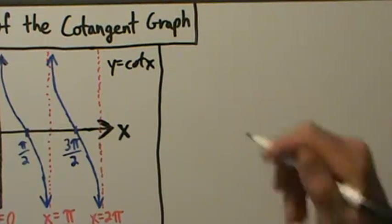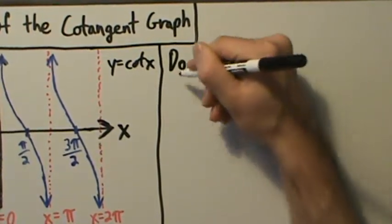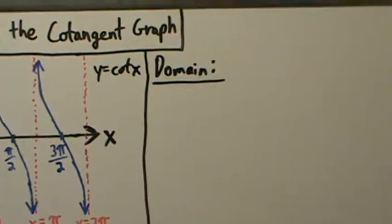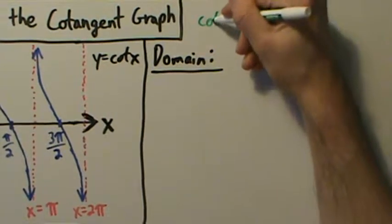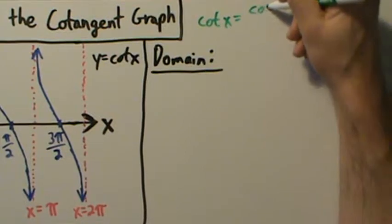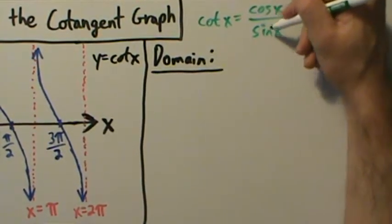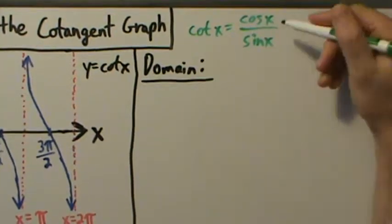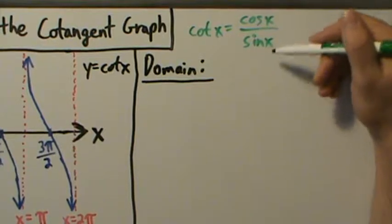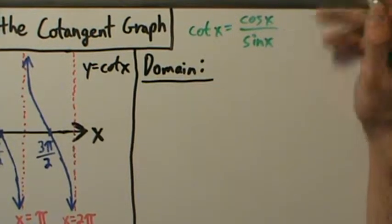We're going to start with the domain. Remember, the domain is the set of all the x values where a function is defined. Before we jump into that, let's remember that cotangent of x equals cosine of x divided by sine of x. So we want to think about what kind of domain restrictions we might have. Cosine and sine each have a domain of all real numbers — you can take the cosine or sine of anything.